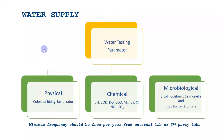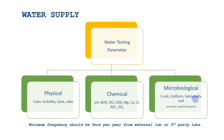For water supply, you need to have testing of the water. The parameters to consider while testing from external laboratories are: physical parameters — color, turbidity, taste, and odor; chemical parameters — pH, BOD, DO, COD, magnesium, calcium, chlorine, nitrate, and sulfate; and microbiological parameters — minimum E. coli, coliform, and salmonella must be included, plus other specific bacteria required according to your product. Remember, even if you do in-house lab testing, you are still required to have a minimum of one third-party lab test per year.